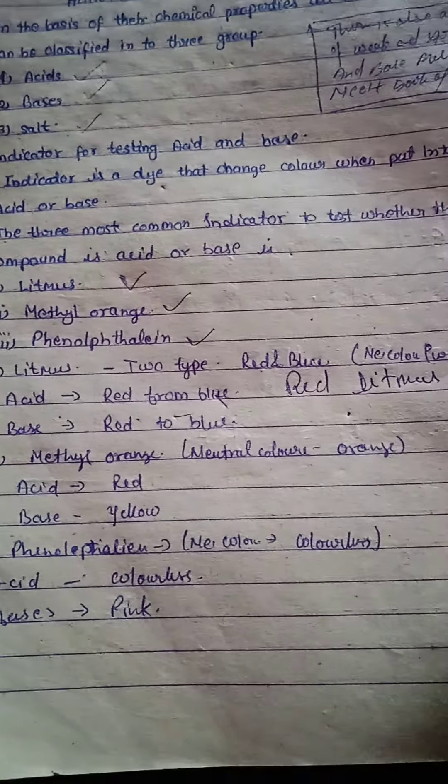Let's talk about olfactory indicators. The term olfactory means relating to the sense of smell. Those substances whose smell or odor changes in acidic or base solution are called olfactory indicators, like onion and vanilla extract.